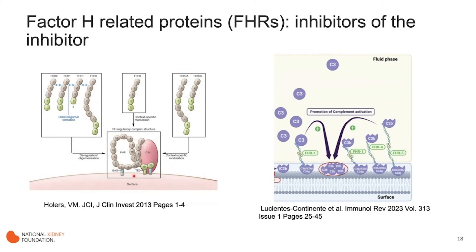I want to discuss another part of the complement system — the factor H-related proteins. In addition to the activation cascades, there is an important complement regulator called factor H, a long string-like protein that floats around in serum but can bind to surfaces and regulate the alternative pathway. Factor H is associated with five factor H-related proteins that probably arose through gene reduplication. These proteins are believed to be antagonists of factor H, competing with it for binding to surfaces, leading to greater alternative pathway activation — or even directly binding surfaces to activate complement.